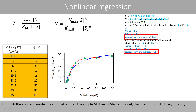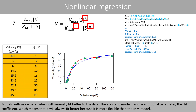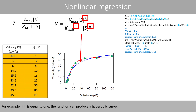Although the allosteric model fits a lot better than the simple Michaelis-Menten model, the question is if it fits significantly better. Models with more parameters will generally fit better to the data. The allosteric model has one additional parameter, the Hill coefficient, which means that it will always fit better because it is more flexible. For example, if H is equal to 1, the function can produce a hyperbolic curve, whereas if H is greater than 1, the function can produce a sigmoidal curve.